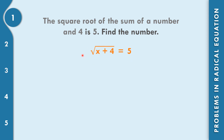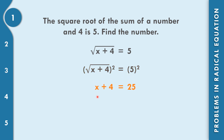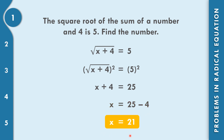Let us solve now for the value of x to find the number. Let us square both sides. If we square both sides, we cancel the 2 and the radical sign, so that becomes x plus 4. 5 times 5 is equal to 25. Positive 4 going to the right side becomes negative, so x equals 25 minus 4, which is equal to 21.